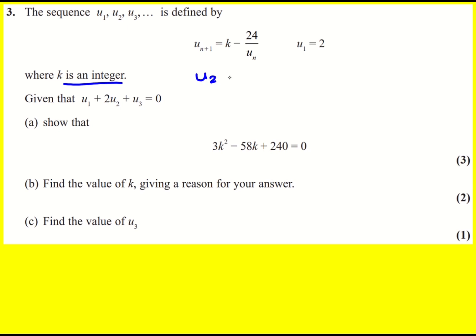So for u2 I just need to set n equal to 1 in this expression, so u2 is then going to be k minus 24 over u1, so k minus 12. And then u3 I just set n equal to 2, so k minus 24 over u2, or 24 over k minus 12.